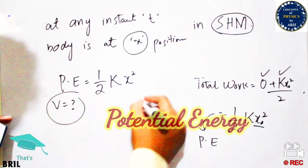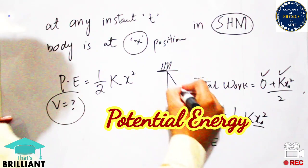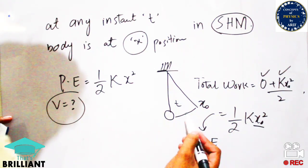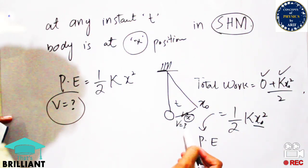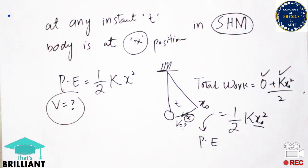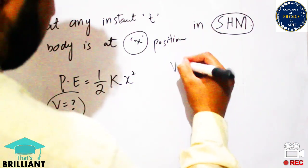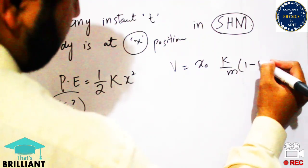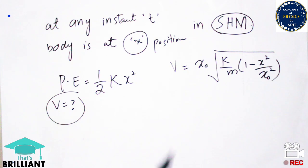We also need to know the velocity of the body as it moves between the mean position and the extreme position — what velocity it has at point X. The velocity formula is: V = X₀ · √(k/M) · √(1 − X²/X₀²).